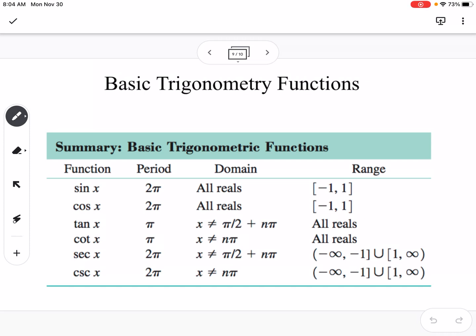You can see that sine, cosine, and secant, and cosecant, since we know that those are related, those all have a period of 2 pi, where tangent and cotangent have a period of pi.